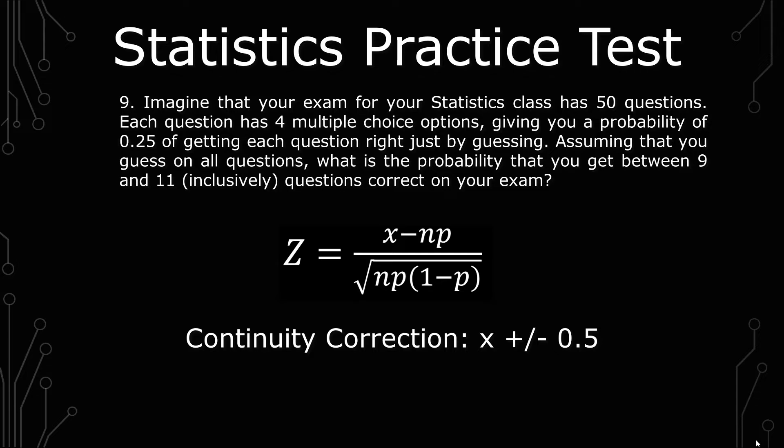So we're looking at the z-score equals x minus np over the square root of np(1-p), and the continuity correction is going to be x plus or minus 0.5.